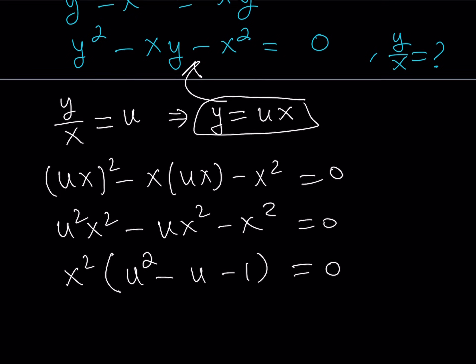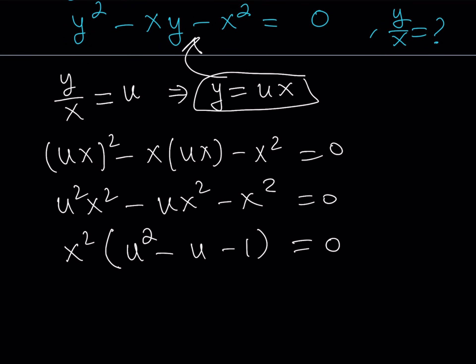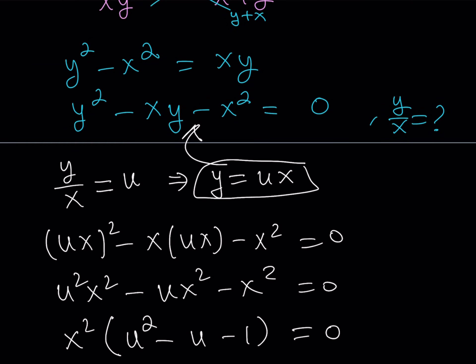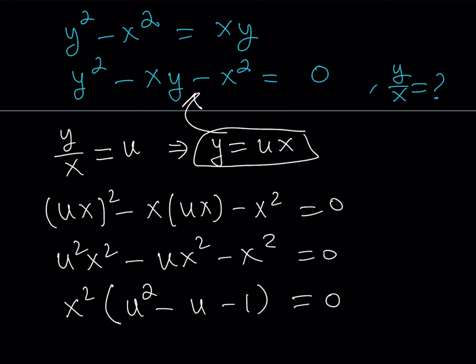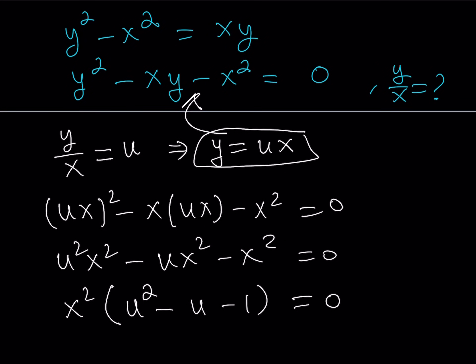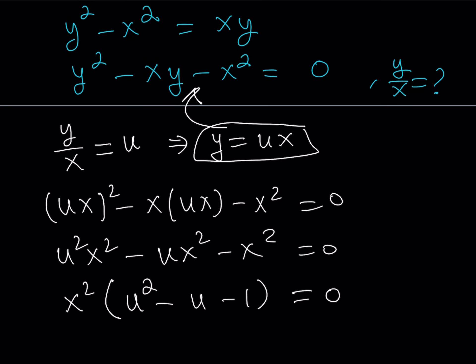Now, we can factor out x squared and that gives us u squared minus u minus 1 equals 0. Now, this problem is going to have a really nice flavor. You can tell me what it is. I'm not going to tell you what it is, but we've done this in another video recently. And we talked about it, I think, in great detail. Anyways, so this equation has interesting roots. We'll talk about that in a little bit. But notice that we have two options from here.